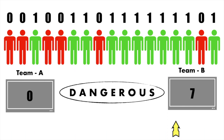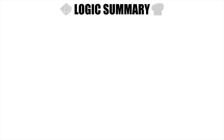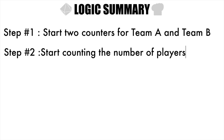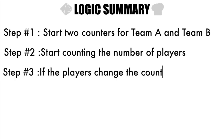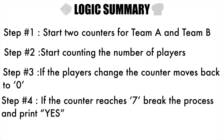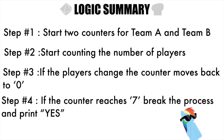Let me summarize the logic. Step one: start two counters, one for each team A and team B. Step two: count the number of consecutive players — if the players change, the counter resets to zero. If the counter reaches seven, break the process and print 'yes'. Using this summary, let's jump into the code editor.